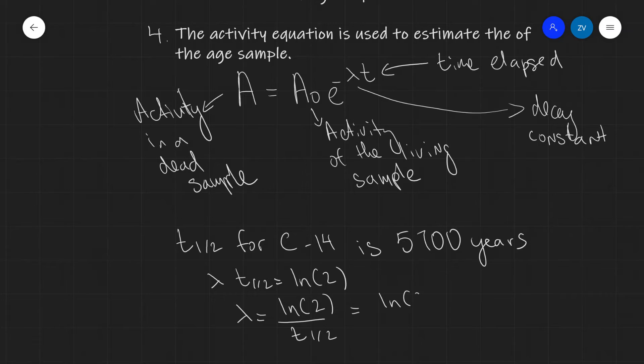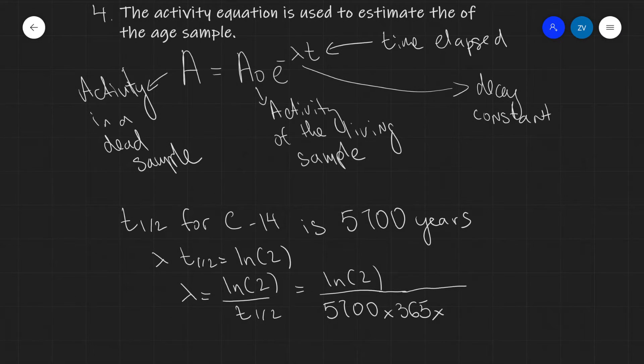Let's convert 5,700 years to seconds. This will be equal to 5,700 times 365 days, and each of those 365 days has 24 hours times 60 minutes times 60 seconds.